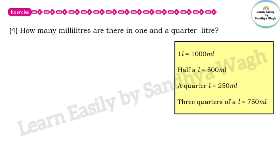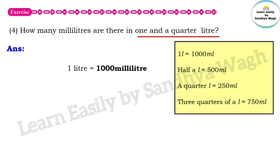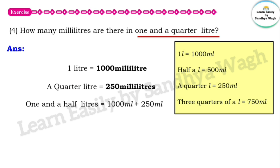Next question: how many millilitres are there in 1 and a quarter litre? One litre means 1000 millilitres and a quarter litre means 250 millilitres. So we add 1000 millilitres and 250 millilitres. After adding 1000 millilitres and 250 millilitres, we get 1250 millilitres.